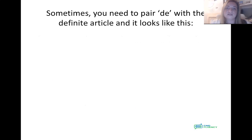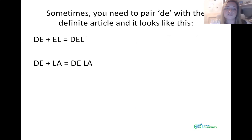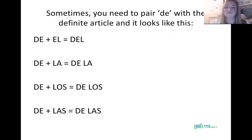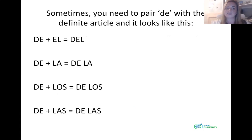Sometimes you have to pair 'de' with the definite article, and it looks similar to al/a la. So: DE + EL = DEL. DE + LA = de la. DE + LOS = de los. DE + LAS = de las.